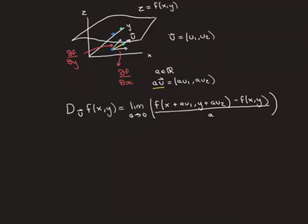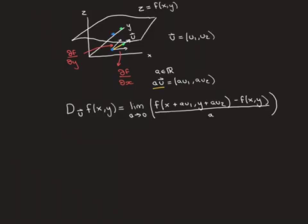The directional derivative in the direction of u is the limit of these secant-line gradients as the yellow line gets shorter and shorter, bringing the green point closer and closer to blue, effectively forming a tangent line to the surface in the direction of u. Our unit vector u has x-component u1 and y-component u2. We scale it by a real number a, so a times u equals (au1, au2), and we let a converge to zero to bring the green point to blue.